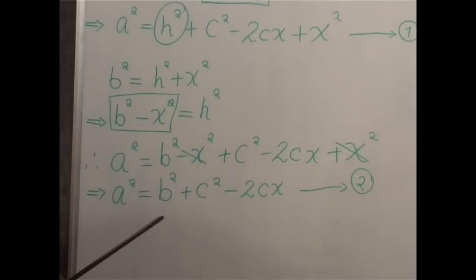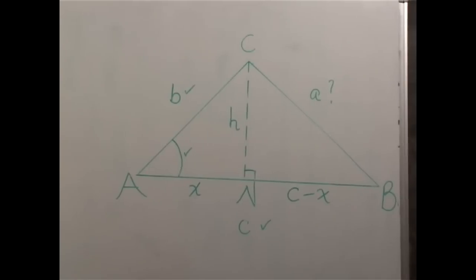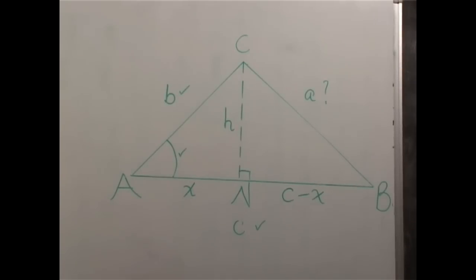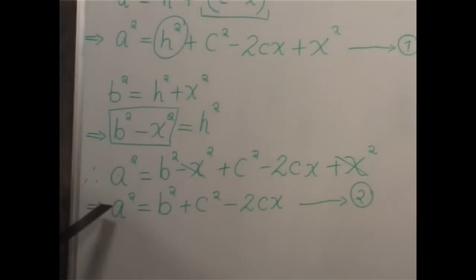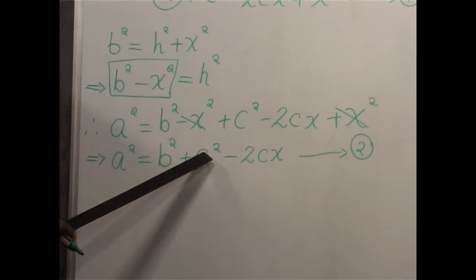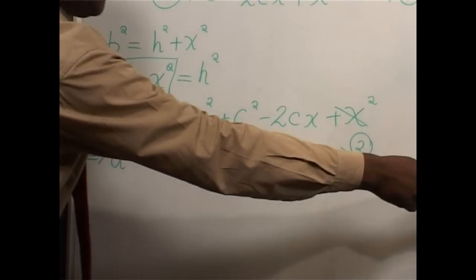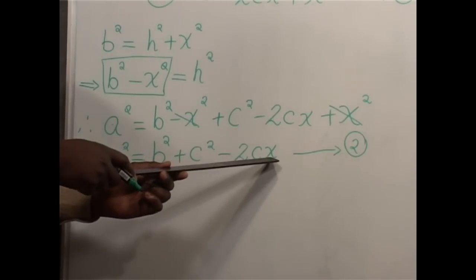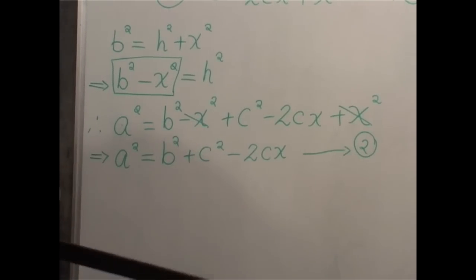Going back to our triangle and looking at the original information given: side C is given, side B is also given, and the angle at A is also given — and A is what we must find. B is given, C is also given, 2 is a constant, but we still have X, which was not there initially, so we must find a way of getting rid of it so that we are left with only the original information.